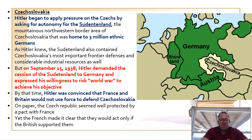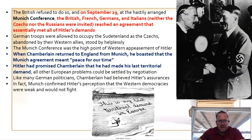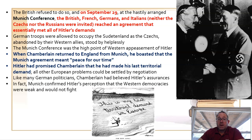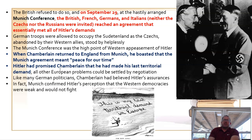In September 1938, Hitler made his demands known, basically issuing an ultimatum: if Germany doesn't get the Sudetenland back, they will go to war. In an attempt to prevent that, Mussolini called for a conference. Four countries were invited to the Munich Conference held in Germany: Great Britain, France, Germany, and Italy. Strangely, Czechoslovakia was not invited. The key figures are Neville Chamberlain, Adolf Hitler, French Premier Daladier, and Mussolini.